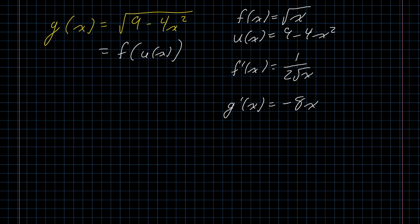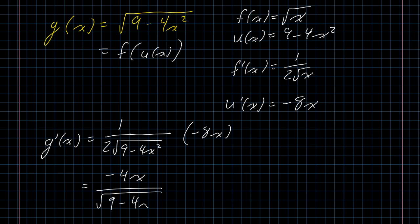And then using the chain rule, this is going to give us that g prime of x is f prime evaluated at u of x. That's going to be one over two times the square root of nine minus four x squared. Then I multiply that by u prime of x, which is negative eight x. I simplify that fraction a little bit. Eight divided by two is four. And I end up with negative four x over the square root of nine minus four x squared.